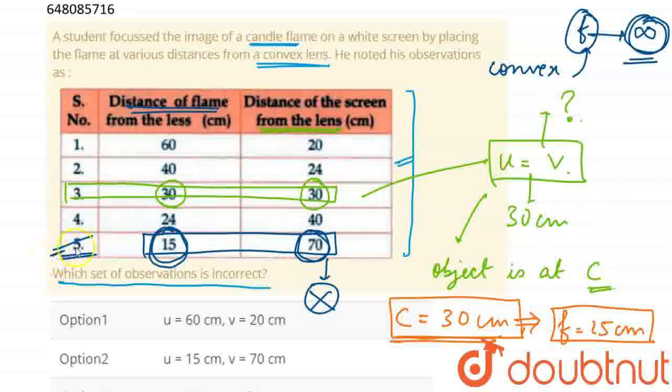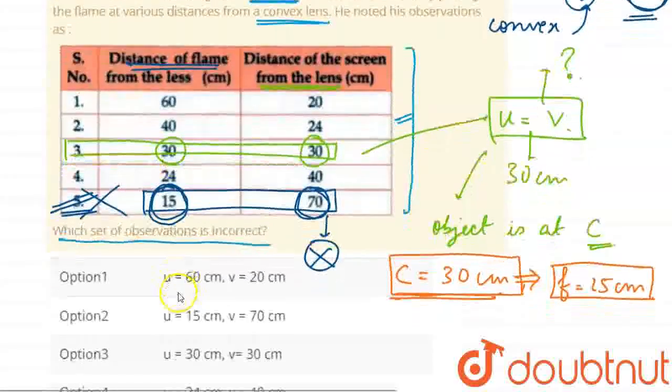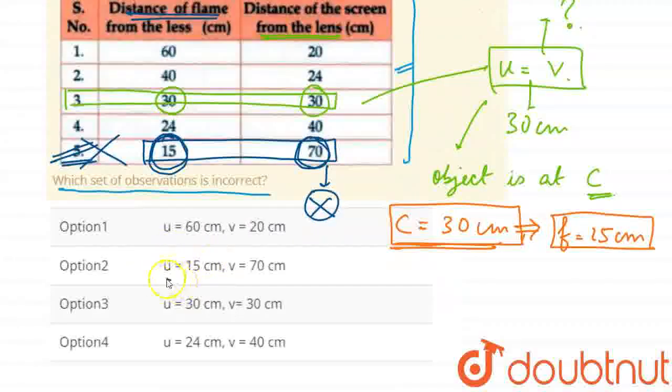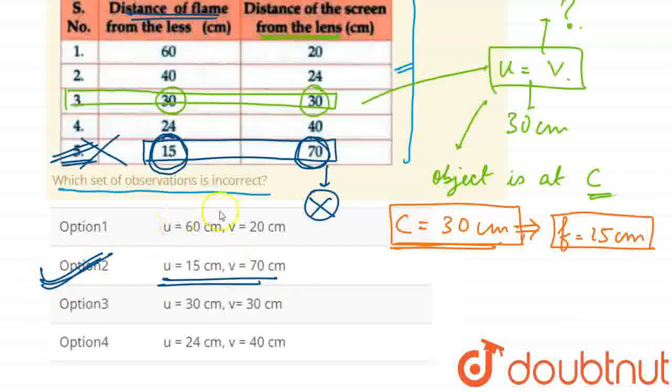What does this mean? This observation is wrong. So here we know that option 2, u equal to 15 cm and v equal to 70 cm, this is the required option, which is the incorrect set of observations.